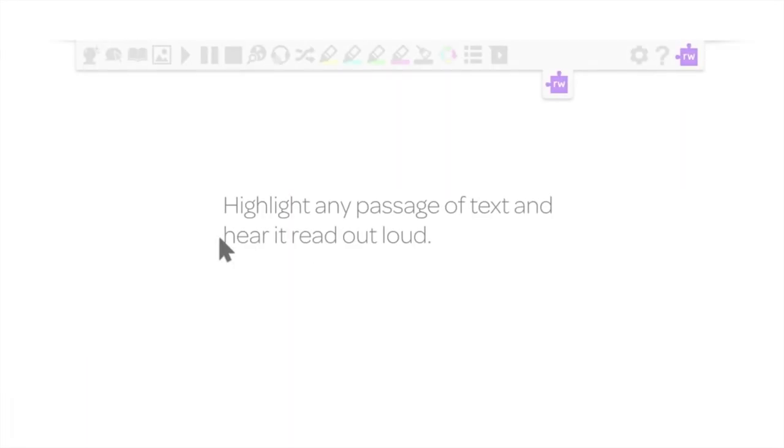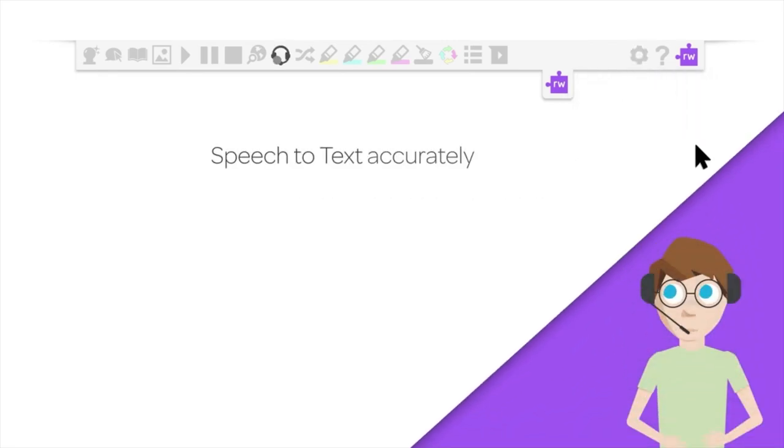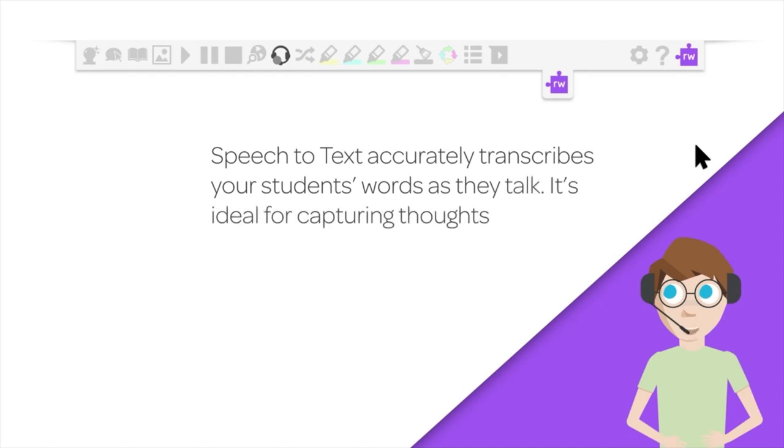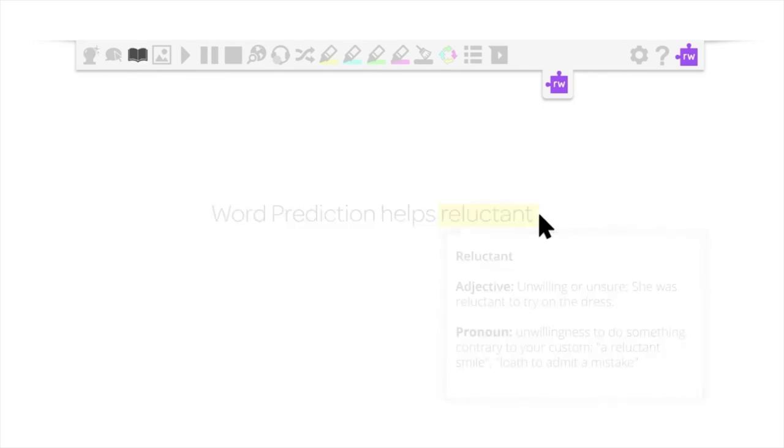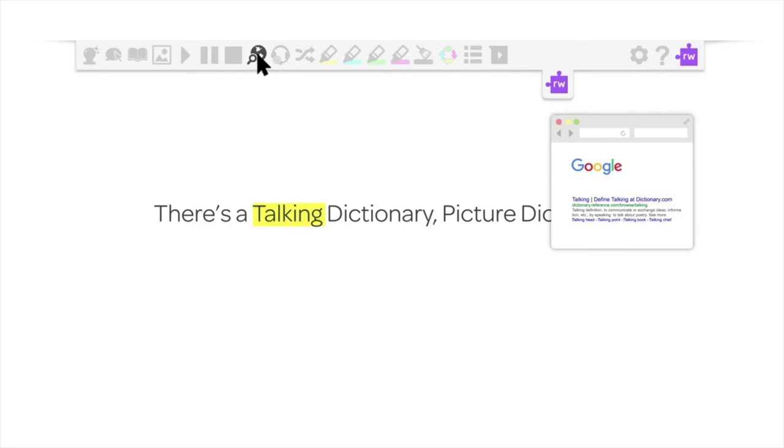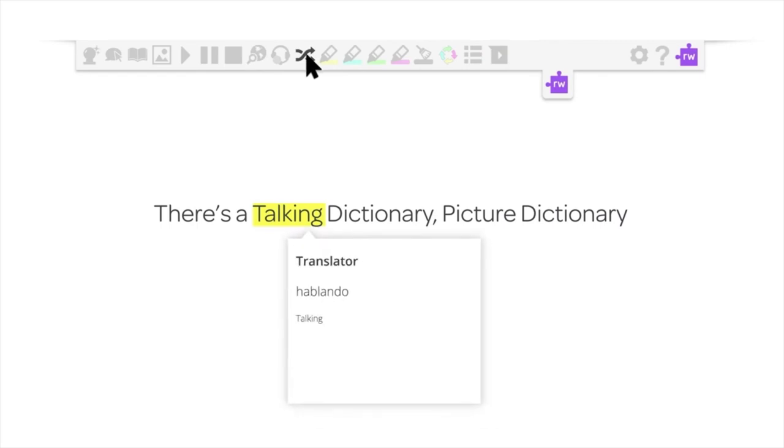Let's see how easy it is to use. Highlight any passage of text and hear it read out loud. You can pick different voices and adjust reading speed to suit any listener. Speech-to-text accurately transcribes your students' words as they talk. It's ideal for capturing thoughts on the fly, especially for people who find typing tricky. Word prediction helps reluctant writers, offering word suggestions as you type. There's a talking dictionary, picture dictionary, and fact finder that make research faster, easier, and more fun. And there's a translator for other languages, such as French and Spanish.